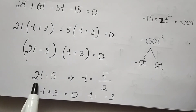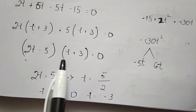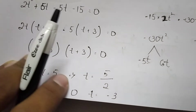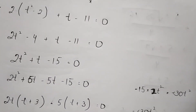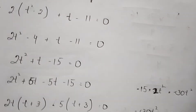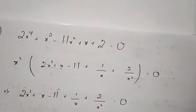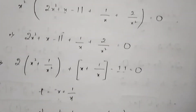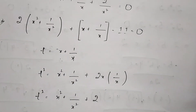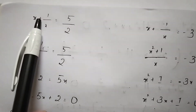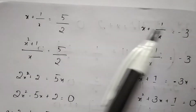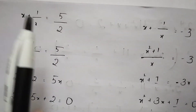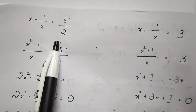The roots we get are from (2t - 5)(t + 3) = 0. From 2t - 5 = 0, we get t = 5/2. From the other factor, we get t = -3. We have successfully found the values of t. The question asks us to find x. Since we set x + 1/x = t, we got t = -3 and t = 5/2. We substitute each value: first t = 5/2, then t = -3.